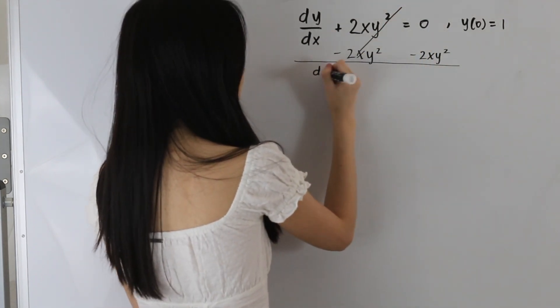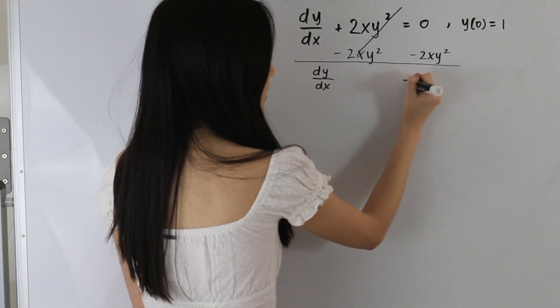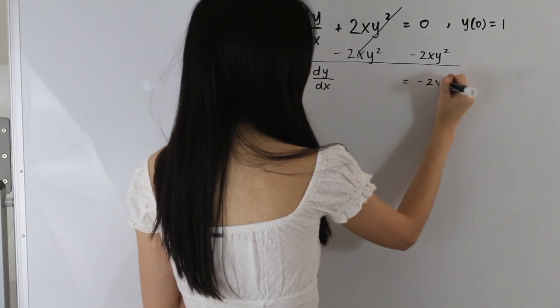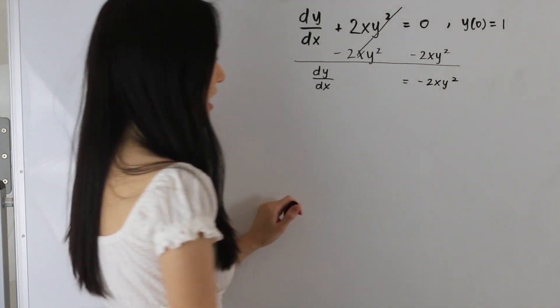We are left with dy over dx is equal to negative 2xy squared. And as a next step,